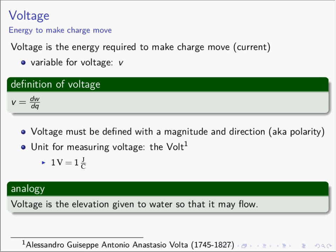An analogy for our hydraulic model: if charge is water, then voltage is the elevation you give to water so that it can flow. If we want water to flow in our pipes, what municipalities typically do is create water towers — they pump water up into the towers, giving the water elevation. When given the opportunity, such as an open faucet, the water will flow. Water wants to flow to its lowest possible point, and charge is the same way — charge wants to flow to the lowest possible point.